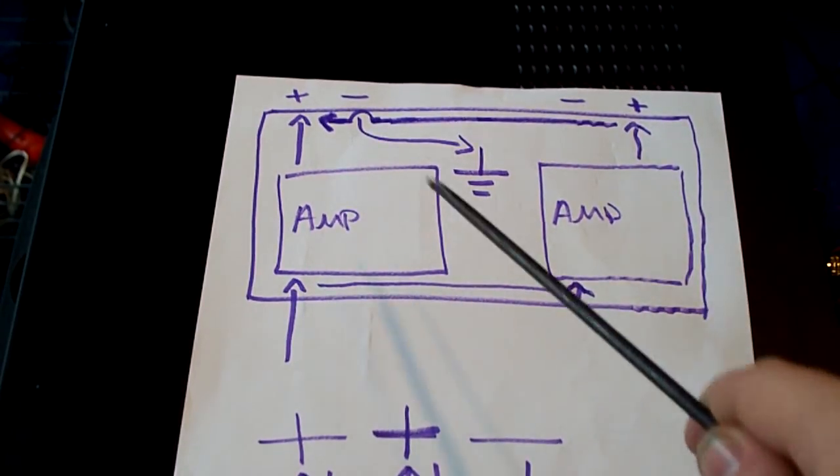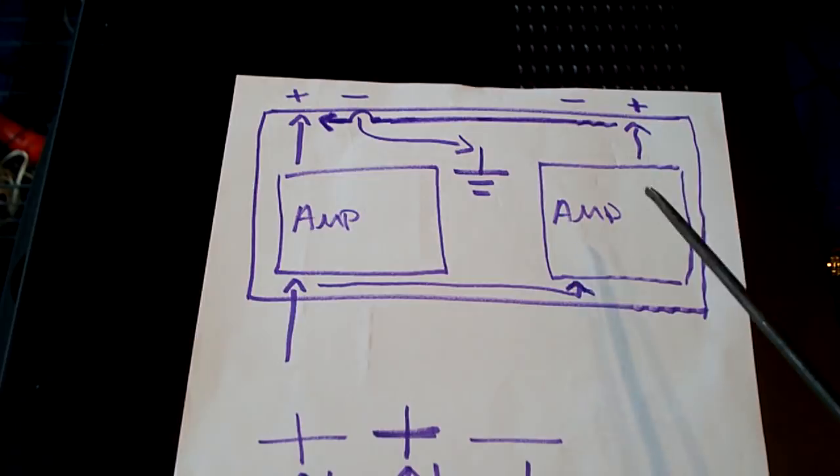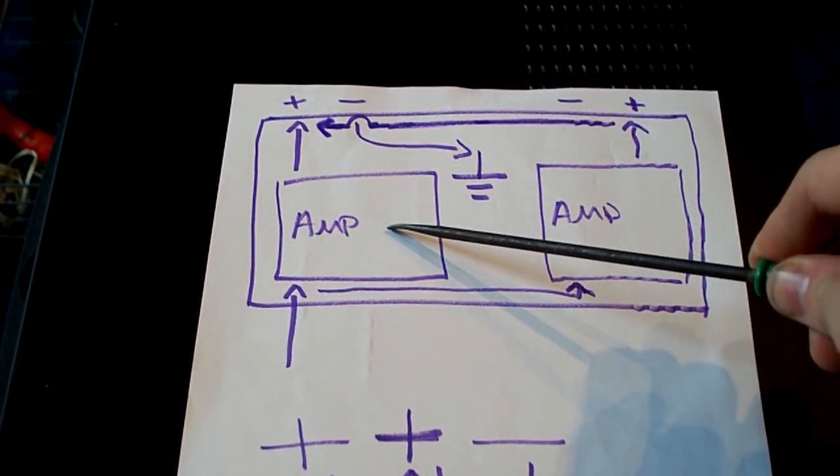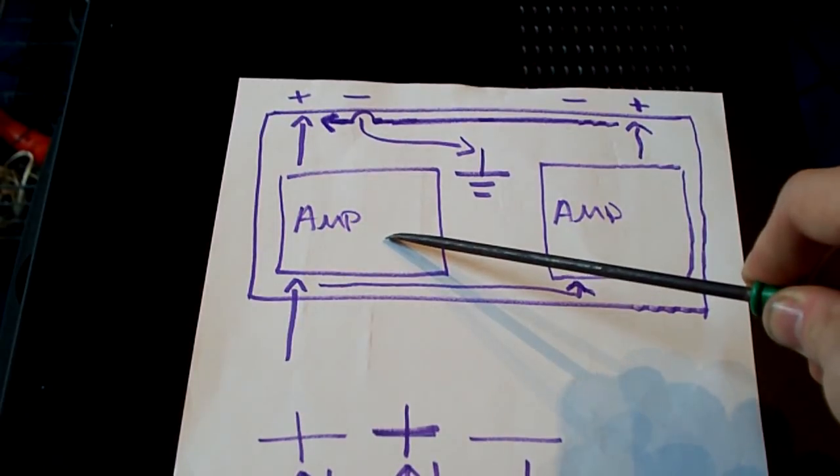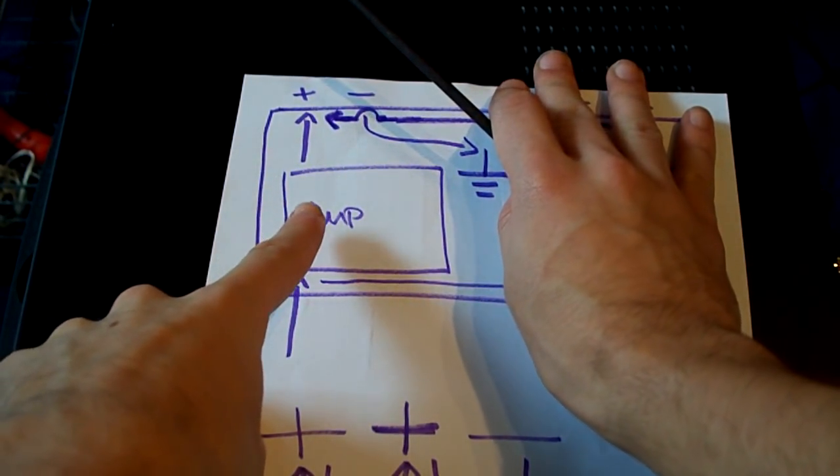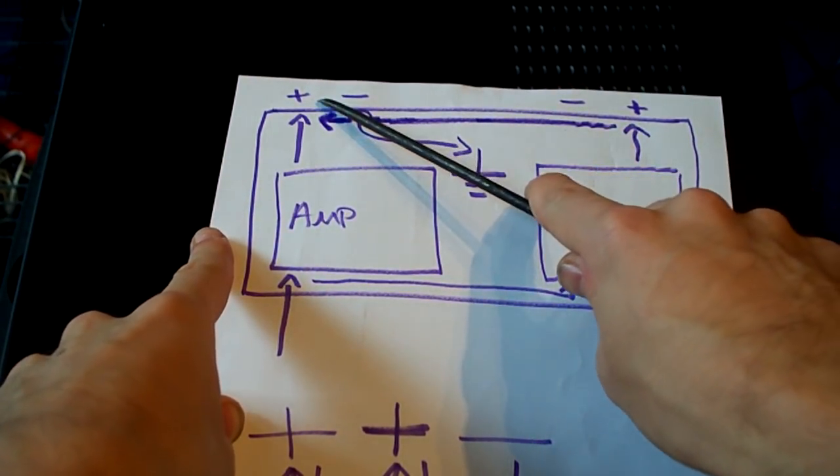Now, this doesn't actually create any more power if you're using the same load. So, for example, supposing you were using a 4-ohm load on one amplifier, just on its own stereo-wise. So forgetting this one, 4-ohm load, you're creating 200 watts RMS, for example. Do this, you're still creating 200 watts RMS at 4 ohms.